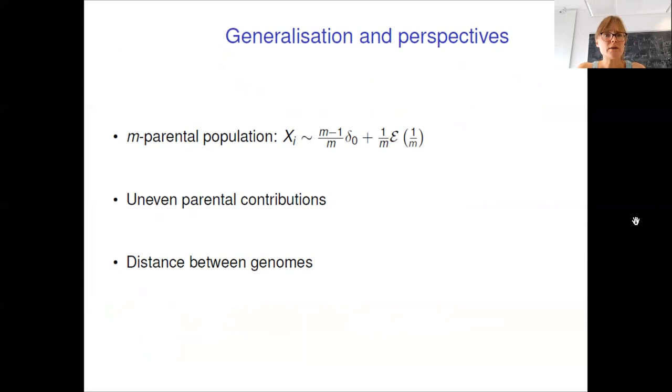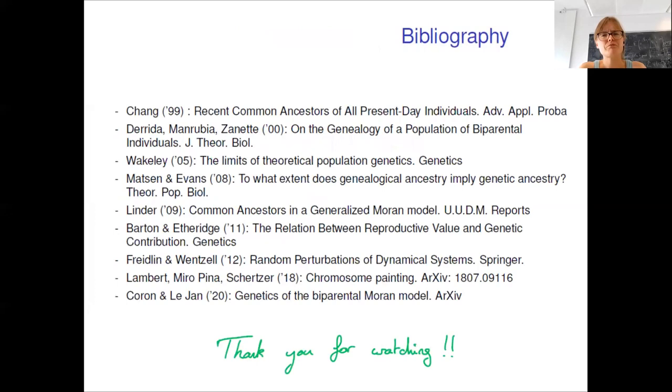We also generalized our results to M parallel populations and obtained that the limiting weight of ancestors are either equal to 0 with probability M minus 1 divided by M or follow an exponential law with parameter 1 over M. We also would like to generalize our results to, for instance, uneven parental contributions or non-uniform mating. And we would like also to consider the distance between the genomes of two individuals in this framework.